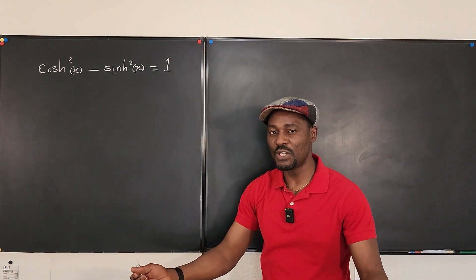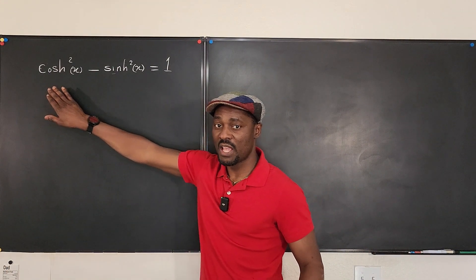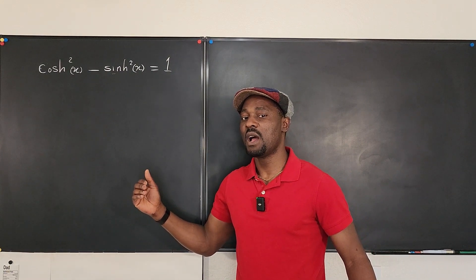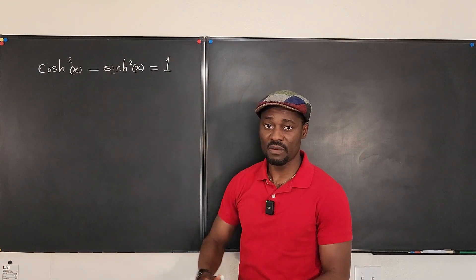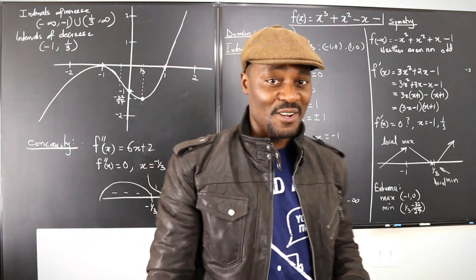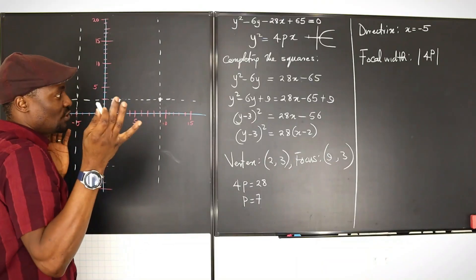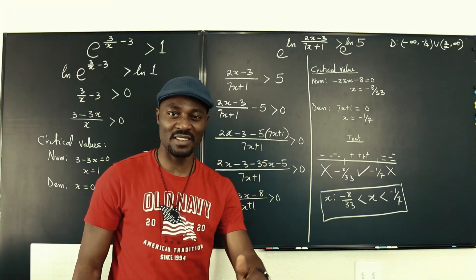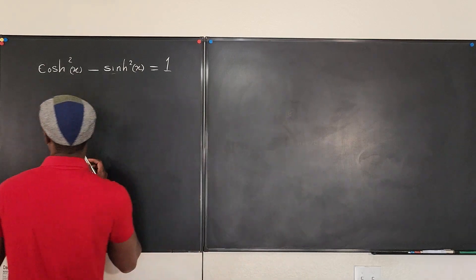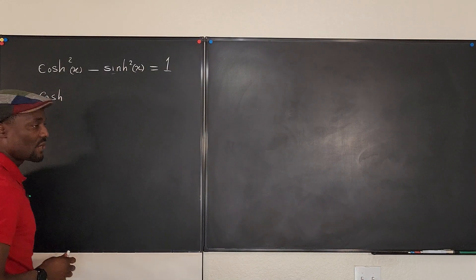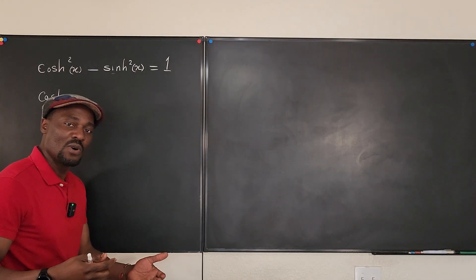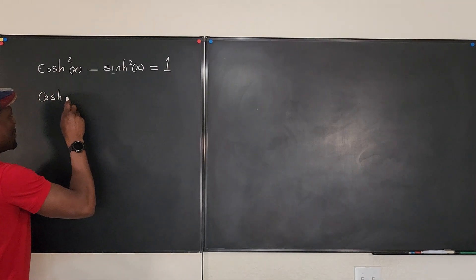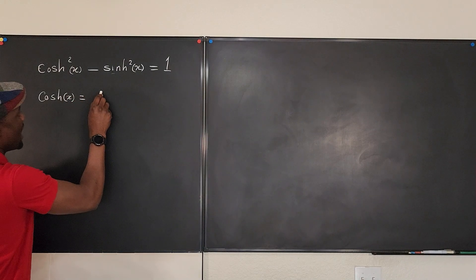To do this we first need to know what hyperbolic cosine and hyperbolic sine are, then square them and show we end up with one. Let's start with the definition of hyperbolic cosine. I'll keep saying 'hyperbolic cosine' so everyone is on the same page whether you're in America or a British environment. Hyperbolic cosine of x can be written as e to the x plus e to the negative x, divided by two.